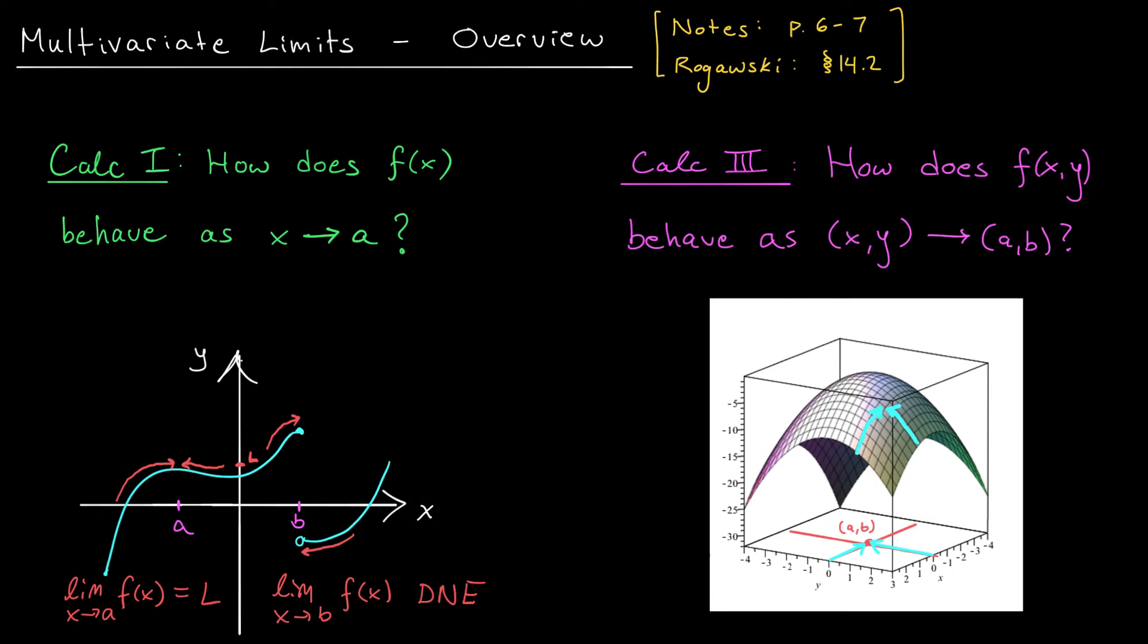Of course, we've only checked two paths. There are infinitely many more left to check. For the limit to exist, the function must approach the same value along every single path to (a,b).